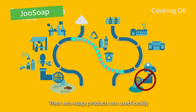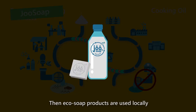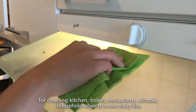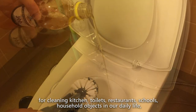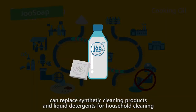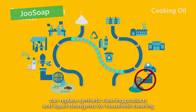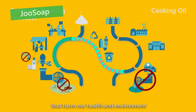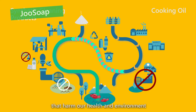Then eco-soap products are used locally for clean kitchens, toilets, restaurants, schools, and household objects in our daily life. They can replace synthetic cleaning products and liquid detergents for our household cleaning, without those additional bad chemical smells that harm our health and our environment.